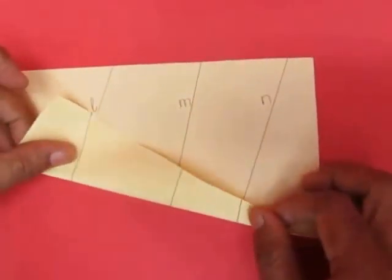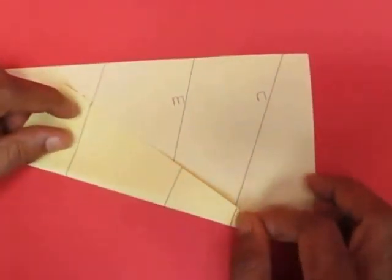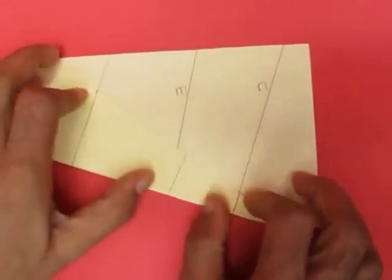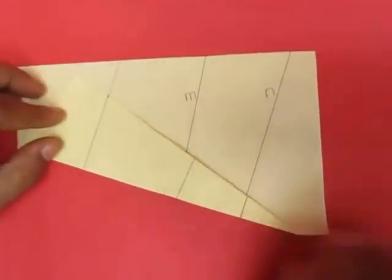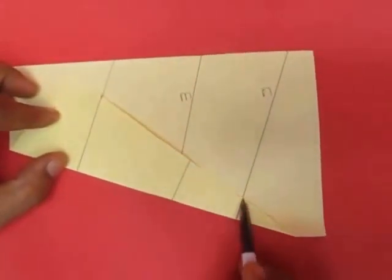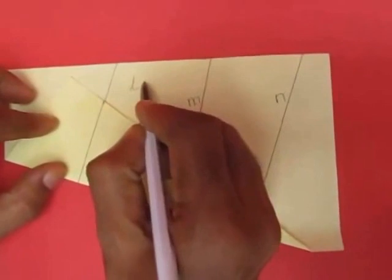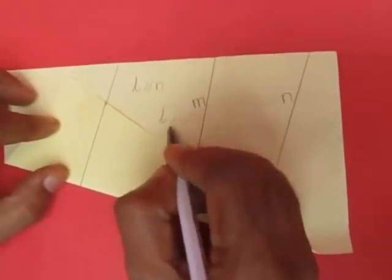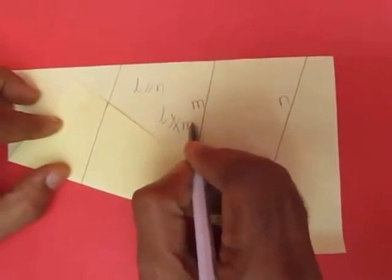If we fold such that the lines overlap we will find that lines l and n overlap but m does not. The fold is perpendicular to lines l and n but it is not perpendicular to m. Hence line m is not parallel to the other two lines which are both parallel.